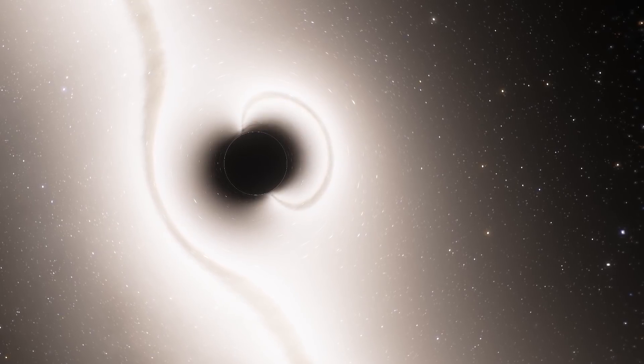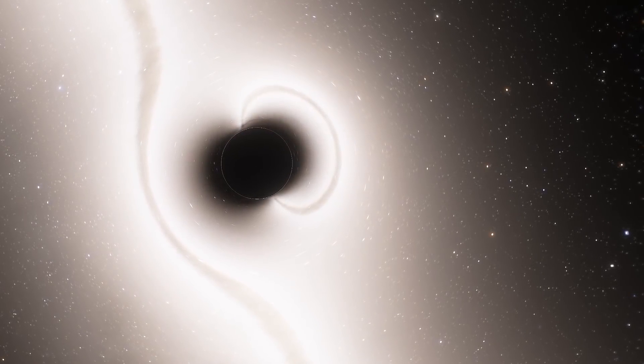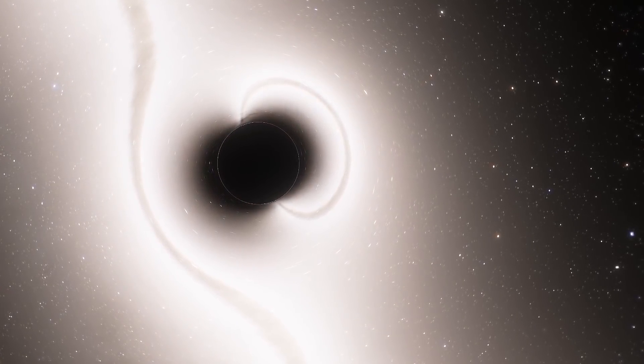And the closer toward the black hole you look, the more reflections of distant objects you're going to be able to see. And hypothetically, if you were to actually reach the event horizon and to somehow stand on the surface here, you would most likely see the entire universe repeating infinitely near the edges of the black hole itself.